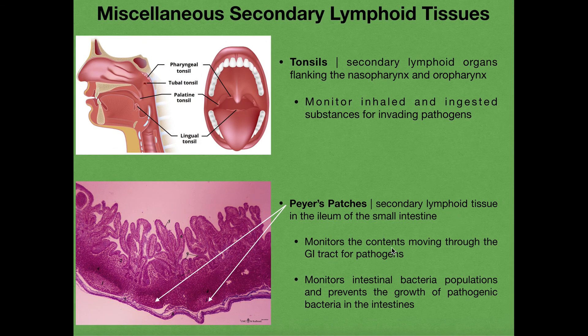What Peyer's patches do is monitor the contents moving through the GI tract for pathogens — playing a very similar role to all the secondary lymphoid tissues. If you're moving contents through the small intestine and there's a significant amount of pathogens, by the time they reach the ileum where Peyer's patches are, those patches can detect the pathogens through their B cells and T cells. They'll then mount an immune response against those pathogens and attempt to destroy them.